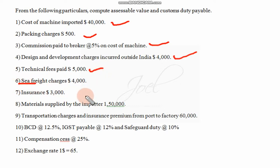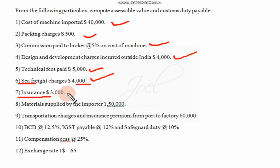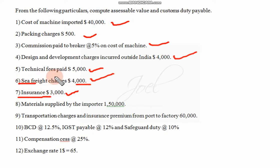Sea freight charges — it is clearly given as sea freight charges. When the amount is given directly, we are going to write that amount; there are no adjustments at all. Insurance is also given in the problem, so that amount itself we are writing. If it is not given, we write 1.125% of FOB price. But when it is air freight, we compare both amounts — the given amount as well as 20% of FOB — whichever is less will be considered.